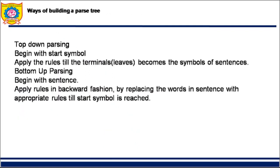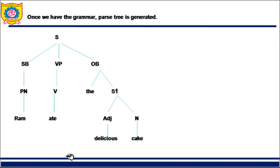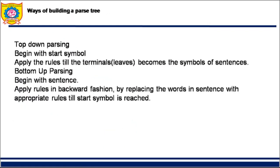There are two different ways of building a parse tree: top-down fashion or bottom-up fashion. In top-down parsing, you start with the start symbol S, apply grammar rules, and come down to the leaves — to the actual words of the sentence. We just did top-down parsing. In bottom-up parsing, you start with the leaves and go towards obtaining the start symbol.